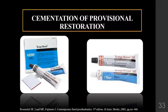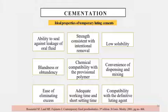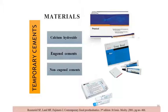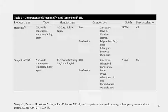The primary function of an interim luting agent is to provide a seal, prevent marginal leakage, and protect the pulp. Ideal properties of a temporary luting cement include: ability to seal against oral fluid leakage, low solubility, strength consistent with intended removal, chemical compatibility with the provisional polymer, compatibility with the definitive luting agent, convenience of dispensing and mixing, adequate working time, and short setting time. Temporary cements can be calcium hydroxide, eugenol cements, or non-eugenol cements.